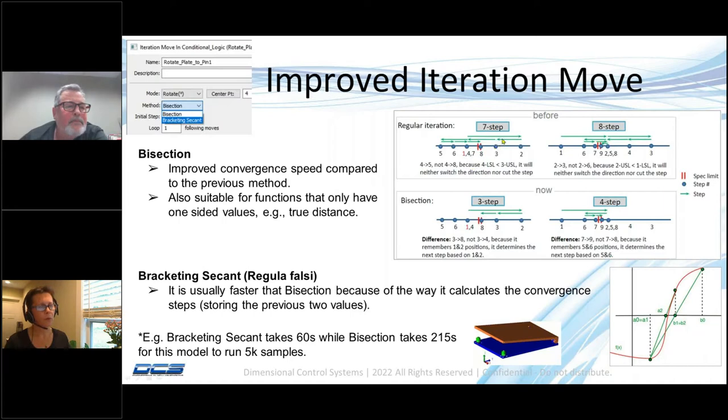The picture here shows you what we did. Basically, we reduced the number of steps by half by improving the calculation. One note here: if your measure that you use in iteration tries to achieve a condition and it's a true distance, then you want to use the bisection for it.